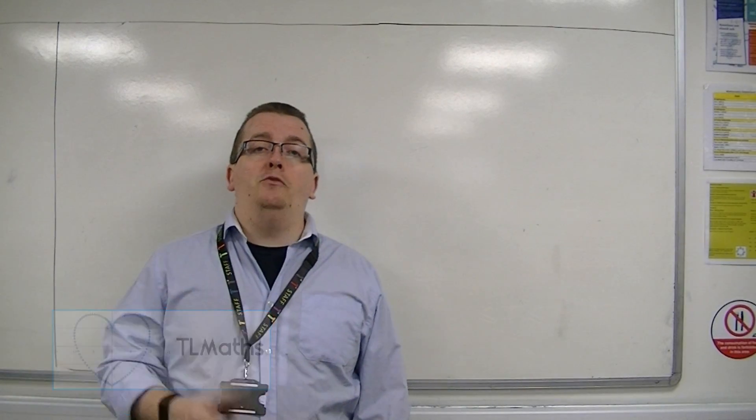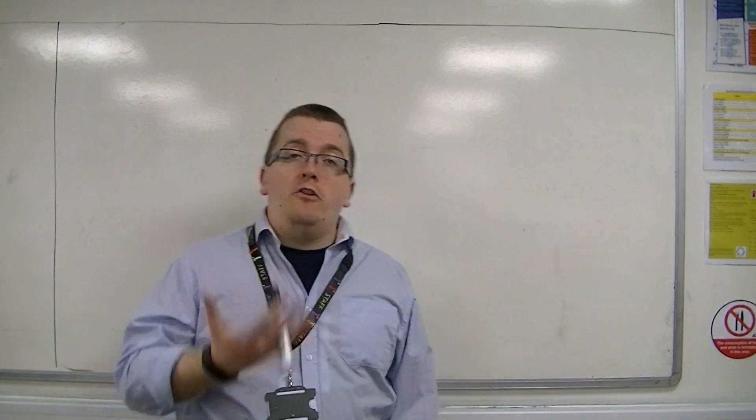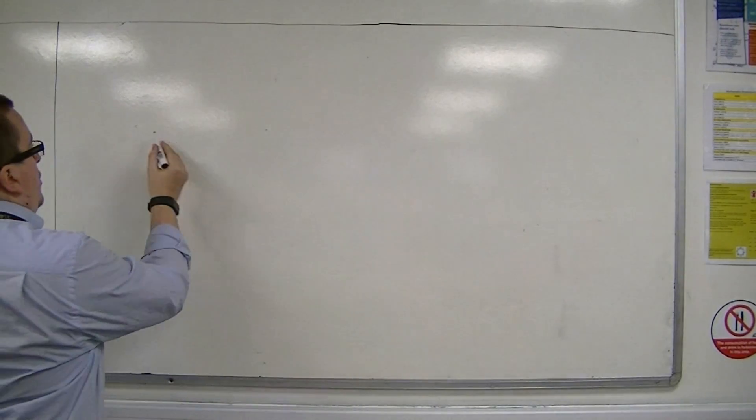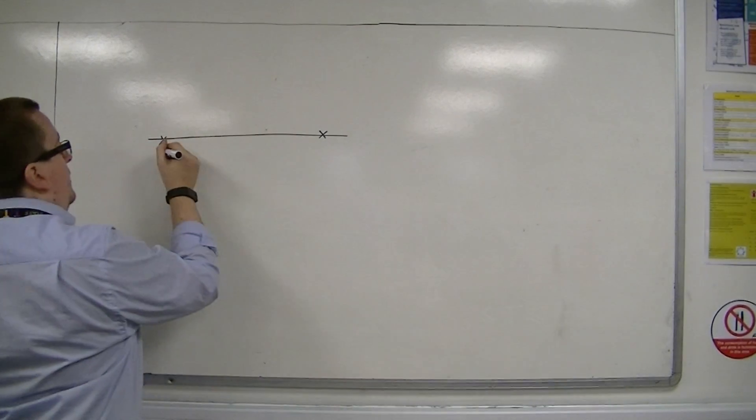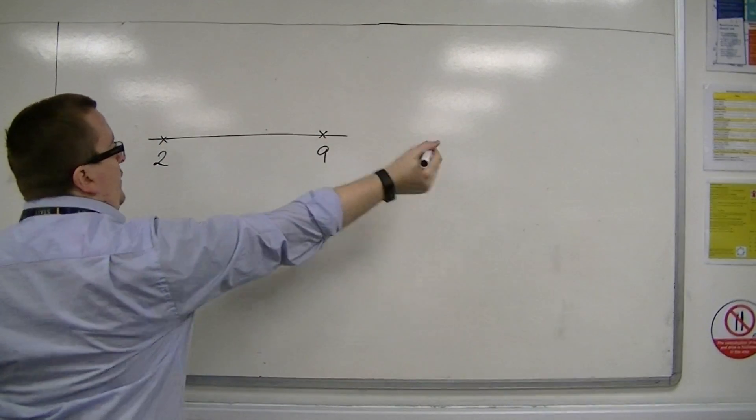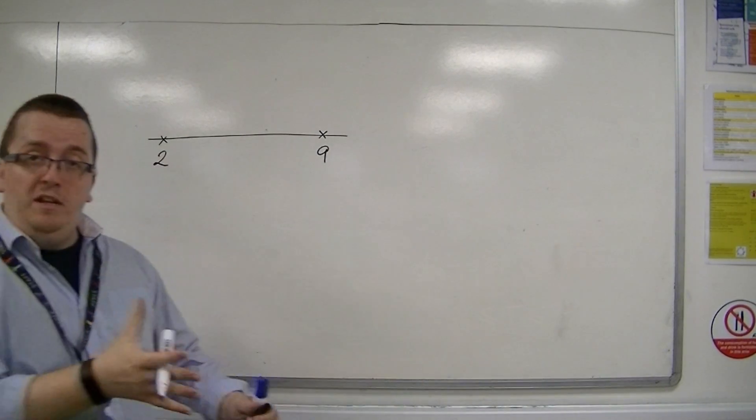In this video, I'm going to be showing you how to find the midpoint between two coordinates. So if we take a very basic example, if you're just trying to find the midpoint between two points on a line, let's say I've got the x-axis, and I've got the coordinates 2 and 9 on the x-axis, and I want to find the midpoint.